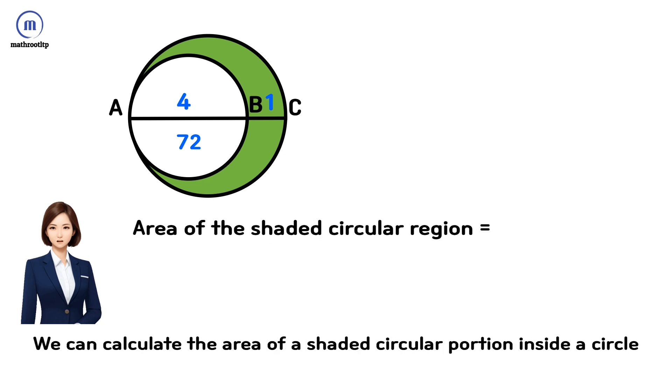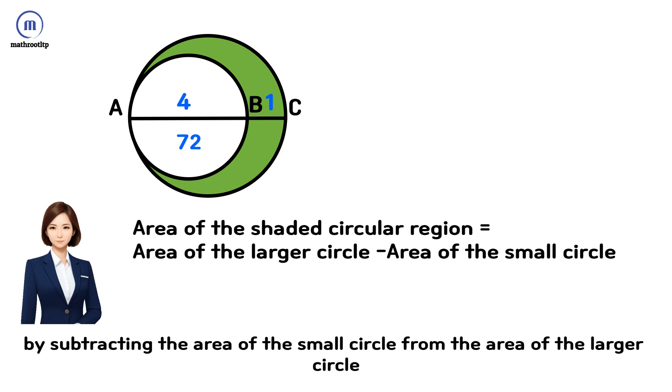We can calculate the area of the shaded circular region by subtracting the area of the small circle from the area of the larger circle.